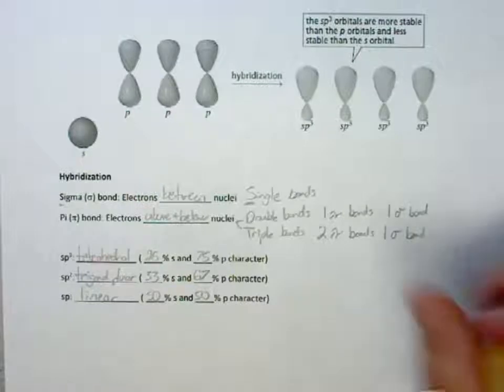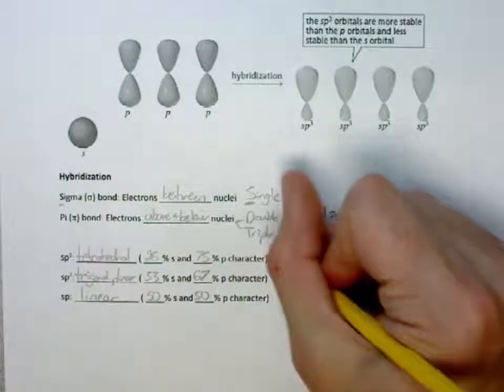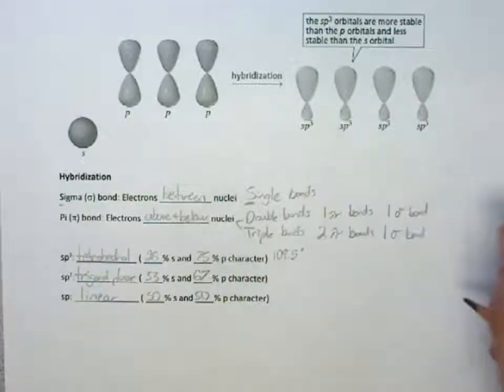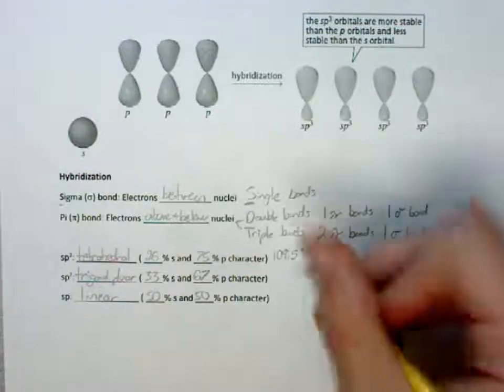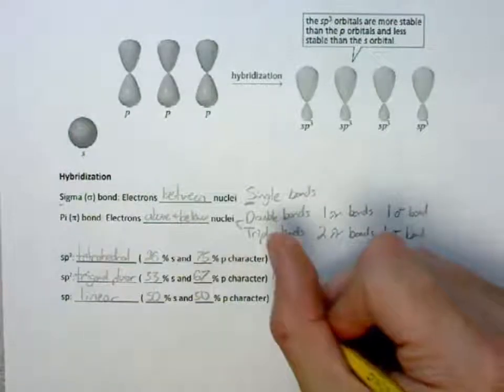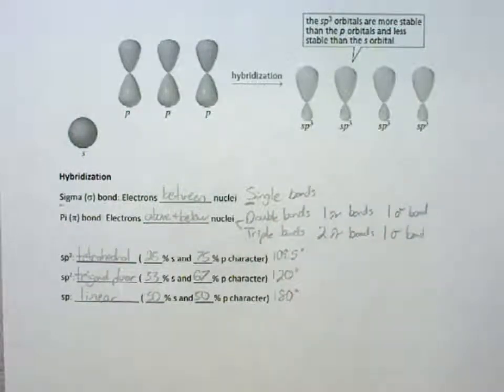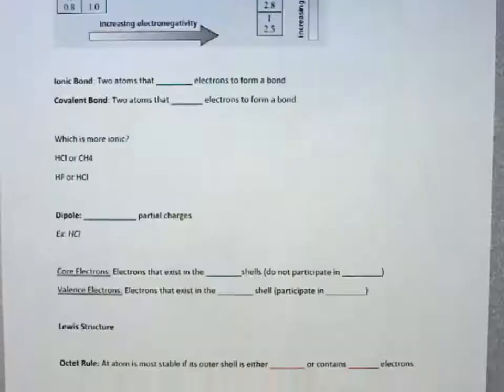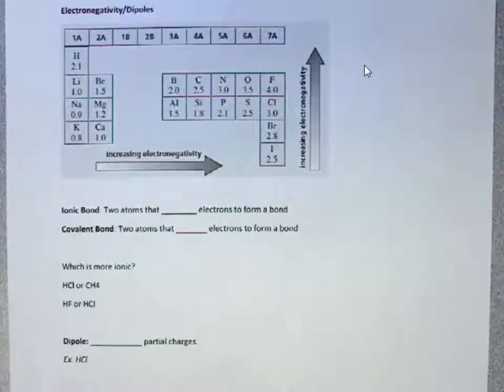For tetrahedral, you get about a 109.5 degree difference between your bonds. For SP2, you get 120. And for linear, you get 180. Now that we understand hybridization in quantum mechanics, we can look at electronegativity between different atoms.